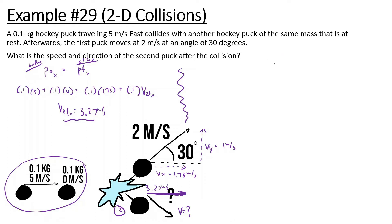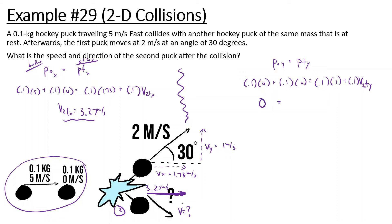Now let's find how fast the second puck is going in the y direction. Momentum initial in y equals momentum final in y. Before the collision, the first puck is only going right so its y-momentum is 0, and the other puck is not moving, so that's also 0. After the collision, the first puck goes 1 m/s upward, and the second puck is 0.1 kg with unknown v2 final in y. Since initial momentum is 0 and they have the same mass, we get: 0.1 × 1 + 0.1 × v2y = 0, giving negative 1 m/s.